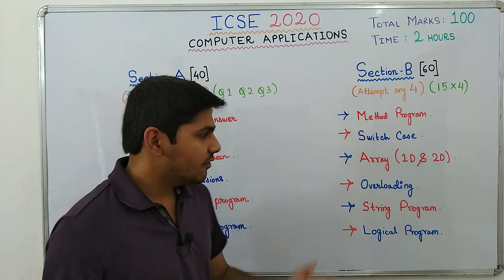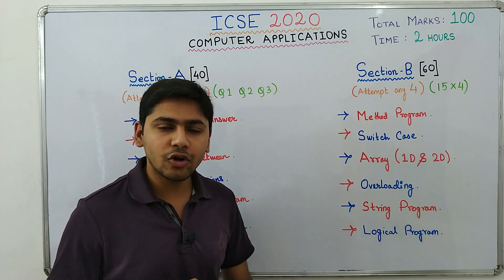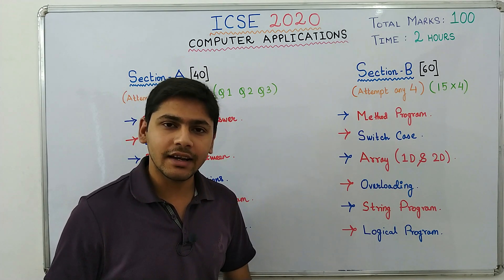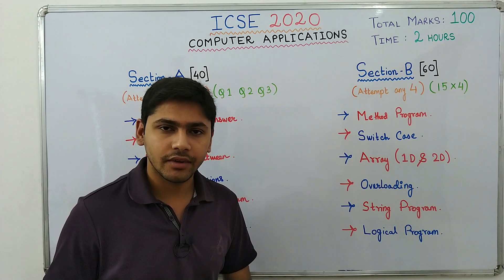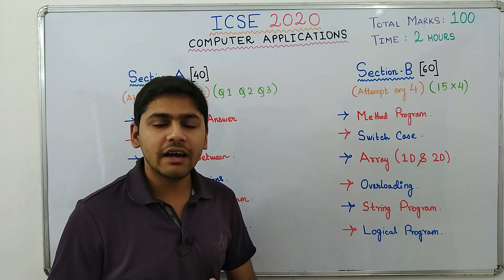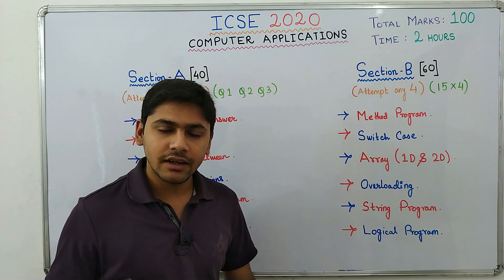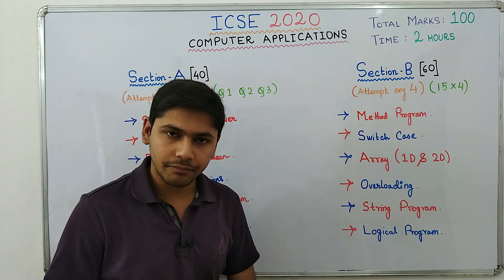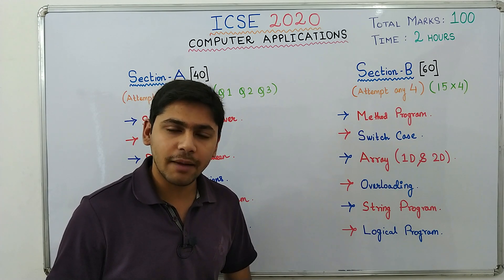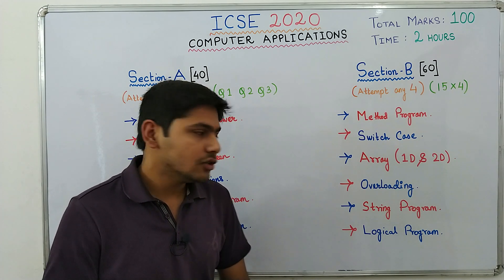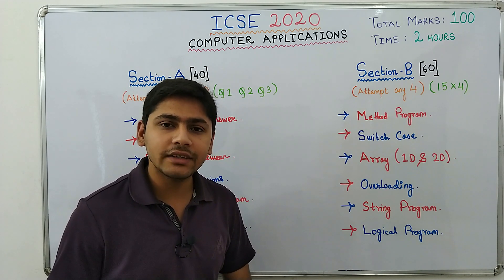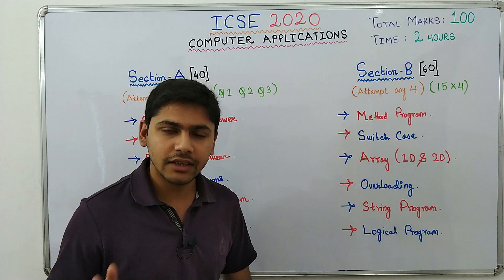Let me tell you a few tips. First of all, the programs are to be written in BlueJ environment. You cannot write the programs in any other programming language — only BlueJ or Java. Your programs must be simple and logical; you don't have to complicate them. Also, variable description is a must for each and every program and it carries marks. So for each program that you write, do write the variable description table.